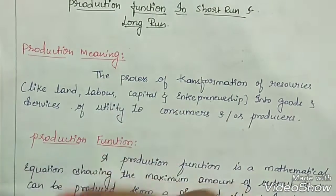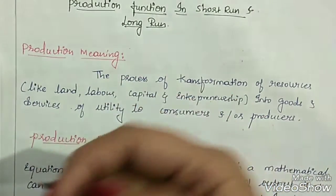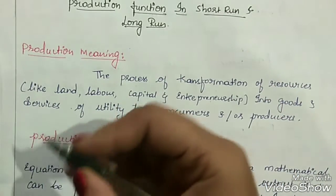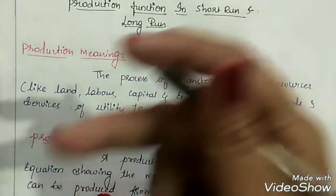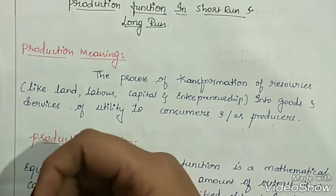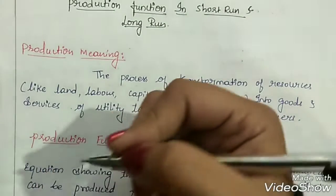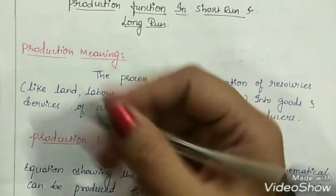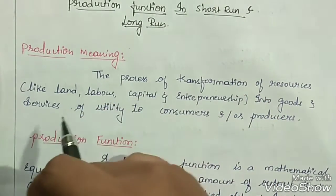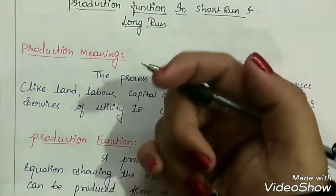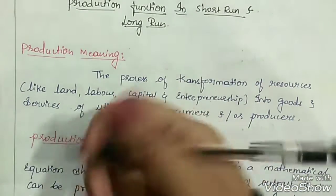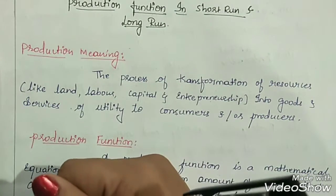Production in general sense means producing anything — converting raw materials into finished goods. Raw materials we cannot consume them directly, but when they are converted into finished goods, they will create a different form of utility.